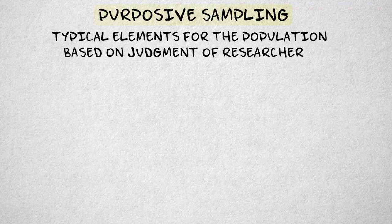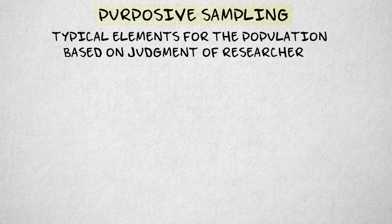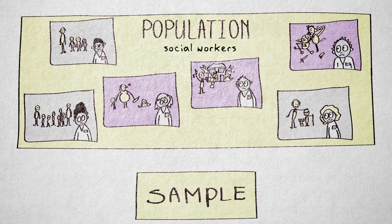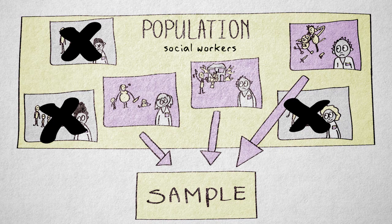A purposive sample can consist of only extreme elements, for example, to get an idea of the effectiveness of social workers working with extremely uncooperative problem families.